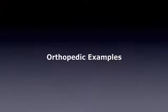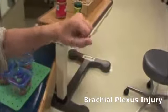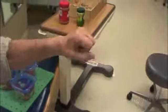Let's now review orthopedic video examples of clients that are appropriate for the SABO Glove. This first example is a brachial plexus client that demonstrates decreased wrist extension when attempting to extend his fingers.